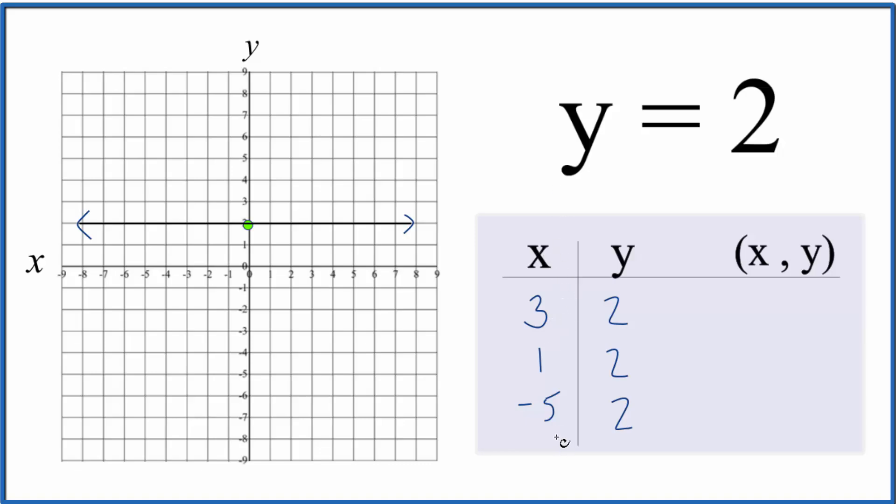So any values I put in for x, y is going to be 2. That gives us these points. And you could have chosen any values for x, y would still be 2. These are just nice because they'll fit on our graph.